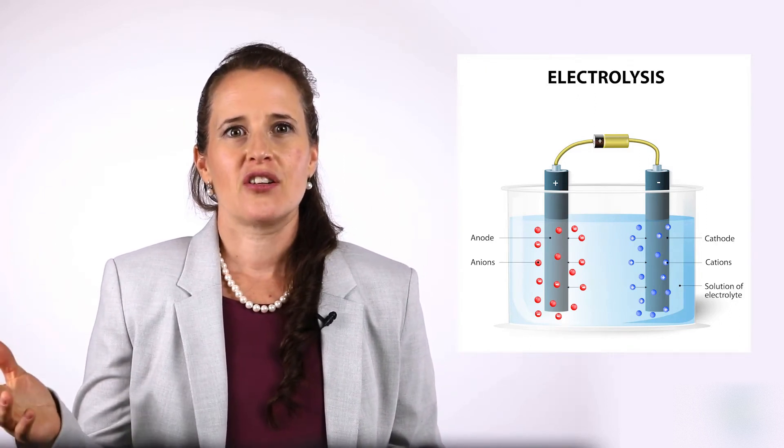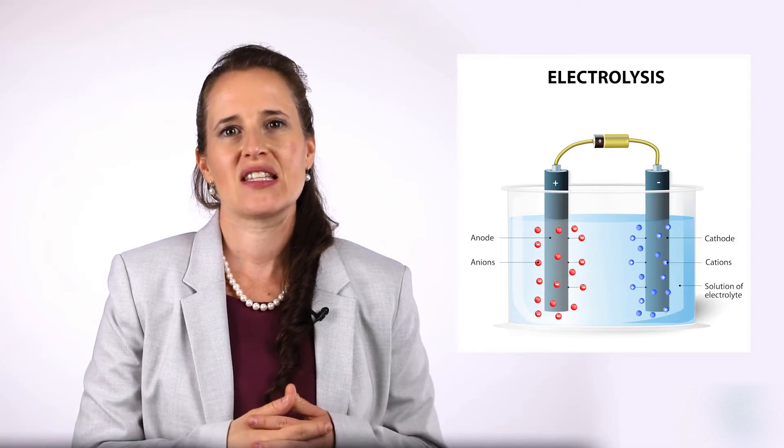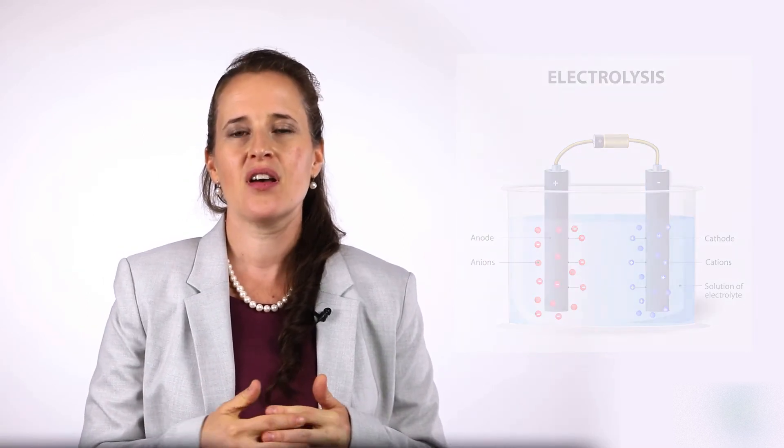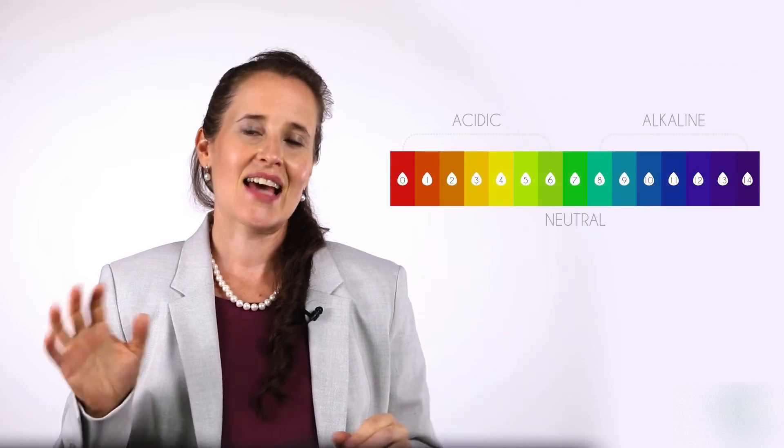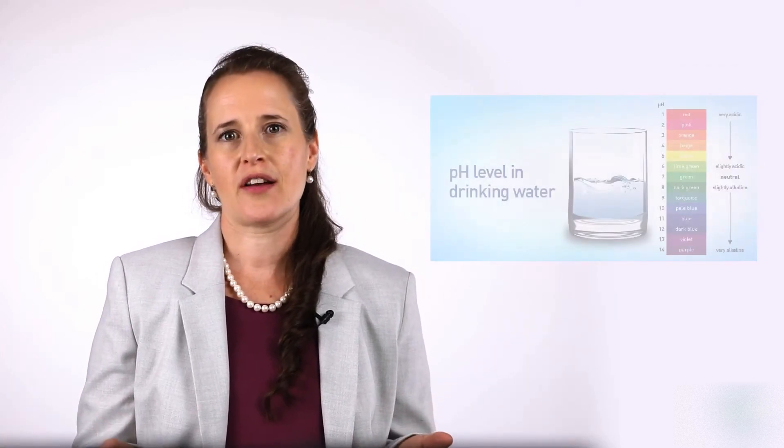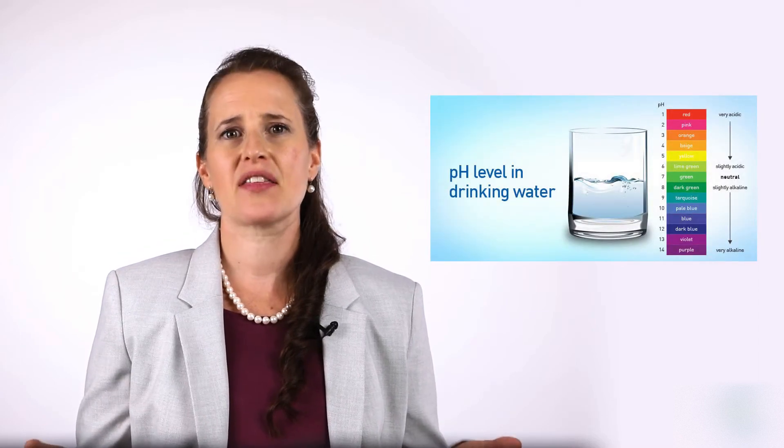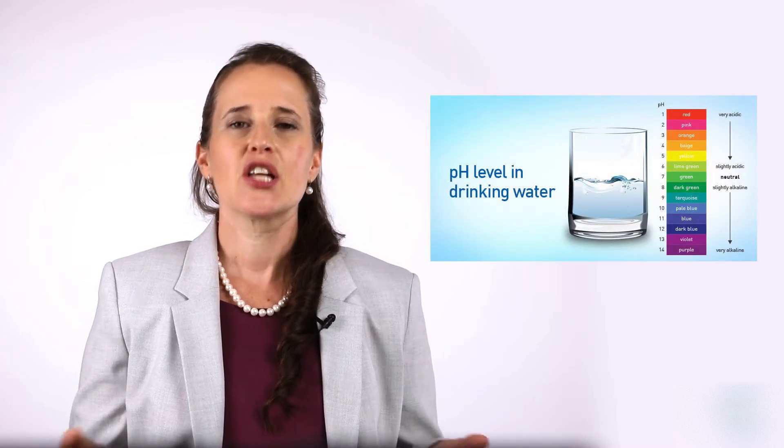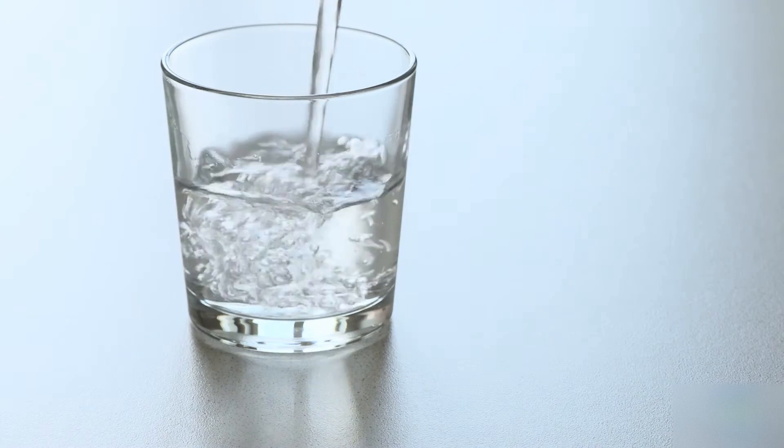These traditional water electrolysis machines have standard membranes that separate them as far as alkaline and acidic properties. This also changes the pH of the final water. However, a new method of electrolysis was designed to produce hydrogen water without changing the pH.